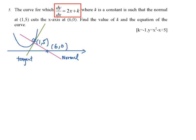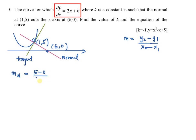Now I have to find the value of k and the equation of the curve. First, the normal is a straight line and you have two points, so you can find the gradient for the normal. Remember, you're using the formula for gradient of a straight line: (y2 minus y1) over (x2 minus x1). That is (5 minus 0) over (1 minus 6), which equals negative 1.